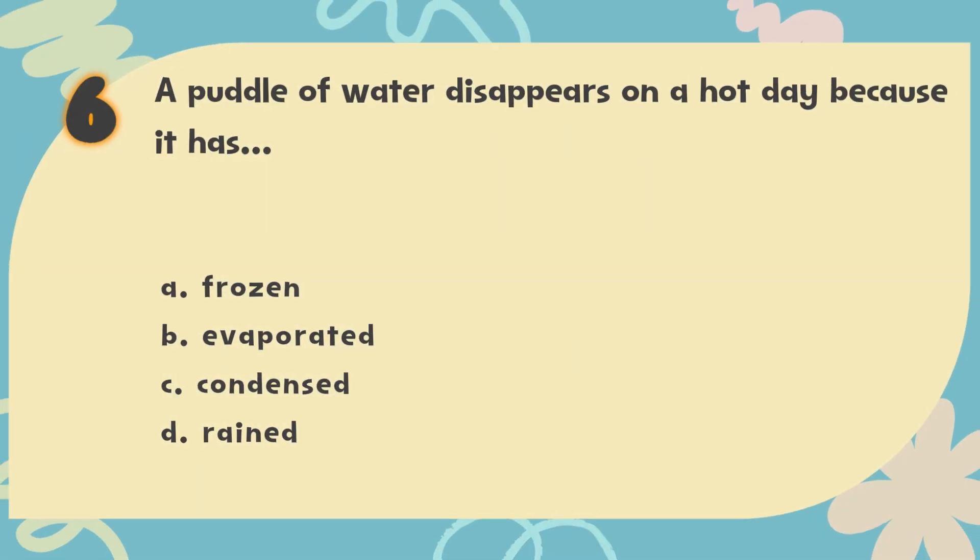The correct answer is B. Evaporated. Evaporation is when the sun's heat turns liquid water into a gas called water vapor, making the puddle dry up.